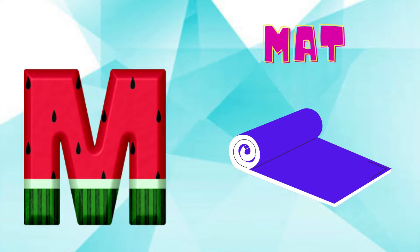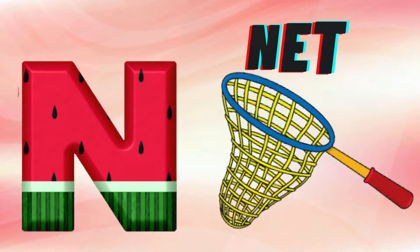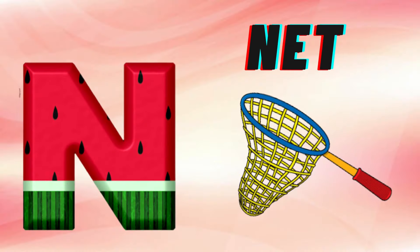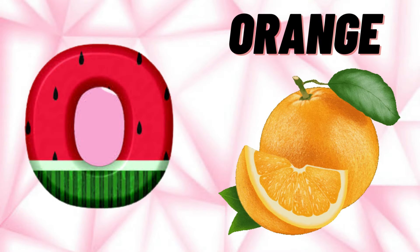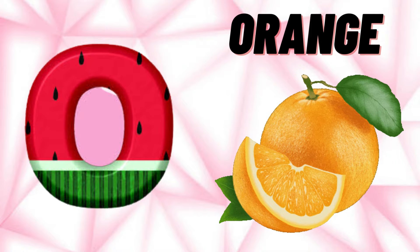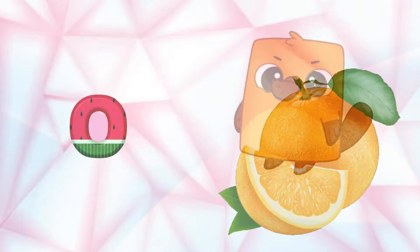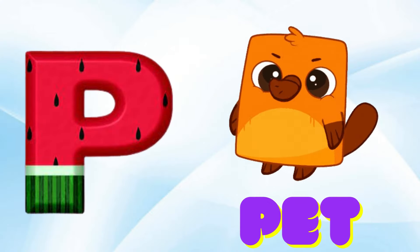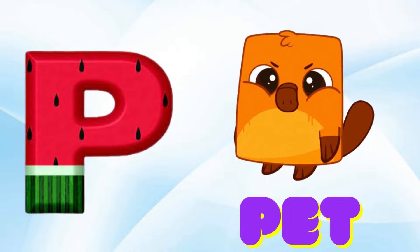M is for Mat, M-M-Mat. N is for Net, N-N-Net. O is for Orange, O-O-Orange. P is for Pet, P-P-Pet.